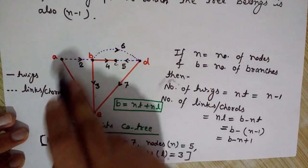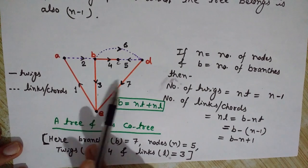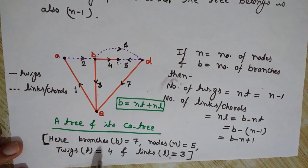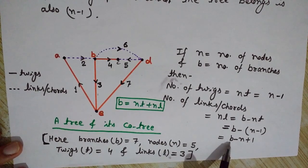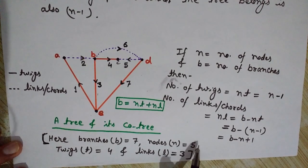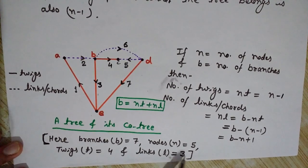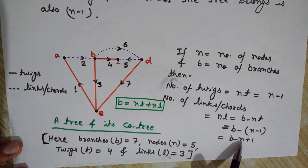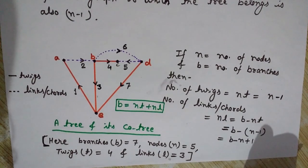Analyzing this figure: the graph has 7 branches total, 5 nodes, and 4 twigs (n minus 1 = 5 minus 1 = 4). The number of links is 3, since 7 minus 4 equals 3. Alternatively, using the formula: b minus n plus 1 = 7 minus 5 plus 1 = 3. I hope you now understand the concept of tree and co-tree.